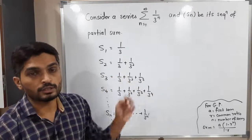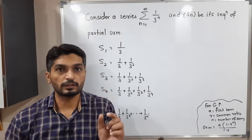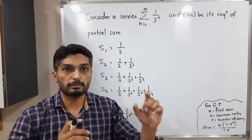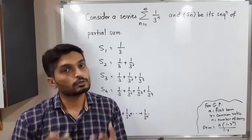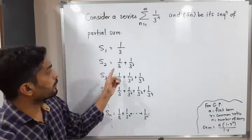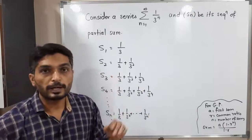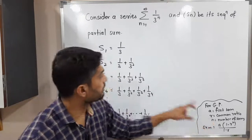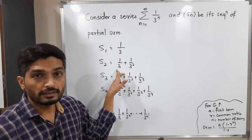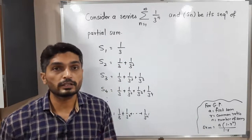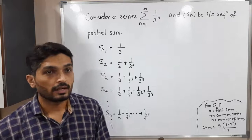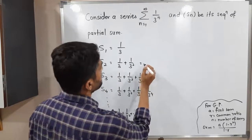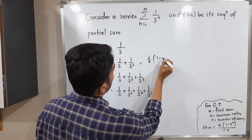A geometric progression means that if you multiply the first term by a fixed number, you get the second term, and so on. Here, 1/3 multiplied by 1/3 gives the second term. So this is a geometric progression with first term a = 1/3 and common ratio r = 1/3. Now let us apply the formula.